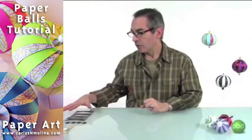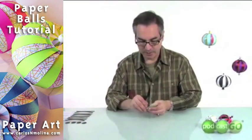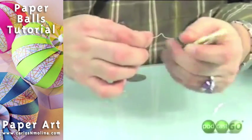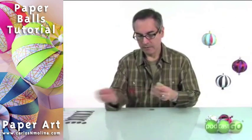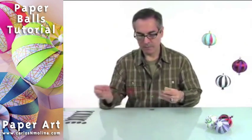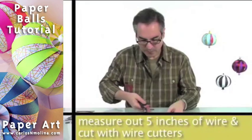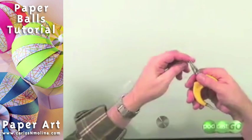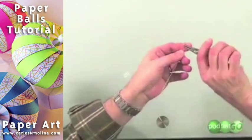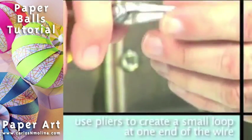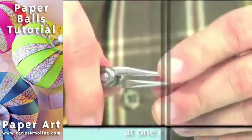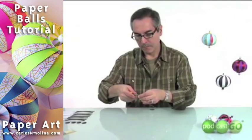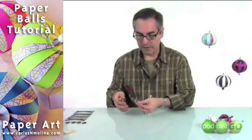Once you have all the pieces cut, you need some wire. Get some wire—you need about five inches of wire. You're going to start by making a little loop at one of the ends of the wire. So you have something like that.